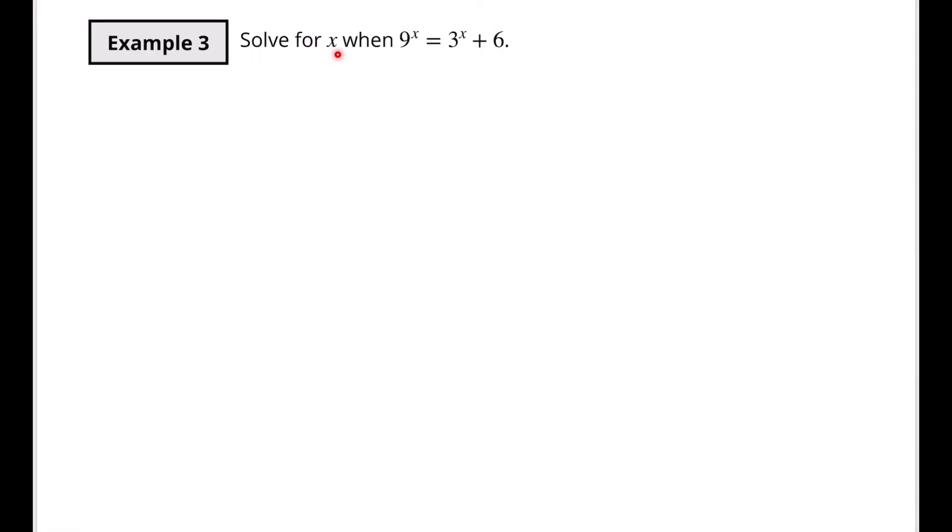Our final example says solve for x when 9 to the x power is equal to 3 to the x power plus 6. Here we've got something a little bit more unique. Now we've got an addition sign thrown into this whole mix. And we've got different bases. So I'm still going to start by looking at if can I change this thing to a 3, base 3. And of course I can do that. So we know that 9 is equal to 3 squared. So I'm just going to substitute that in there. So 3 squared to the x power is equal to 3 to the x power plus 6.